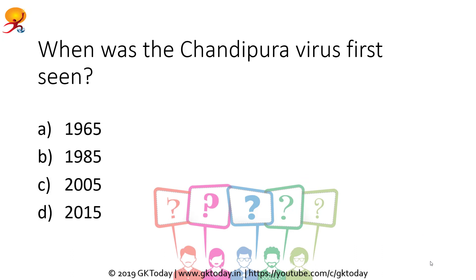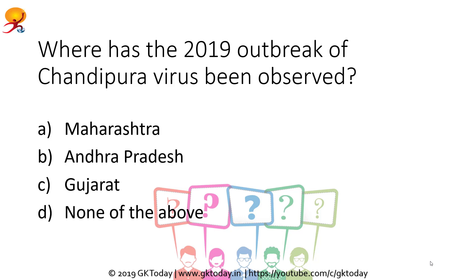Now let us move on to possible questions. When was the Chandipura virus first seen? The correct answer is 1965 — it was first seen in 1965 in the Chandipura village of Maharashtra, so option A is the correct answer. Where has the 2019 outbreak of Chandipura virus been observed? It has been observed in Gujarat, so the correct answer is option C.